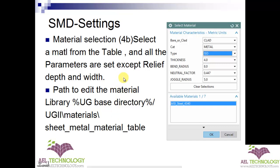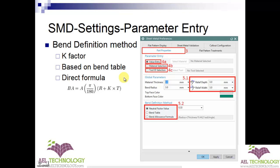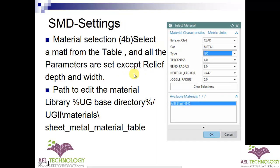Next, based on parameter entry, we move to material selection. When you click that radio button you will get a dialog box with many available materials from the material library — some are default. If you want to edit the material library, go to the UG base directory, then to ugii, then materials, where you can find the sheet metal material table .txt file.